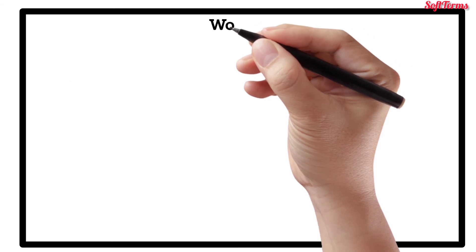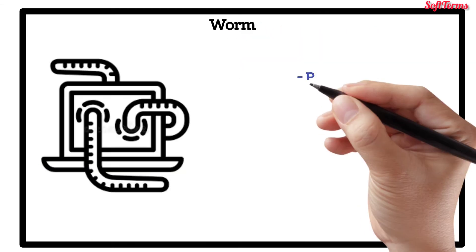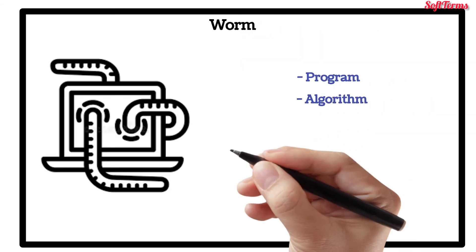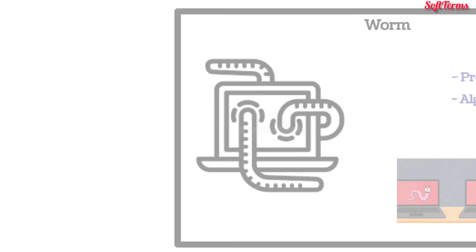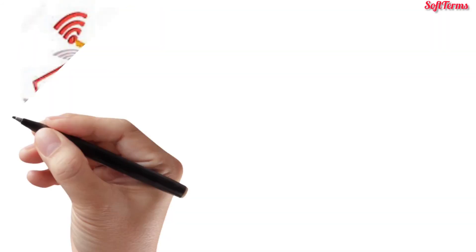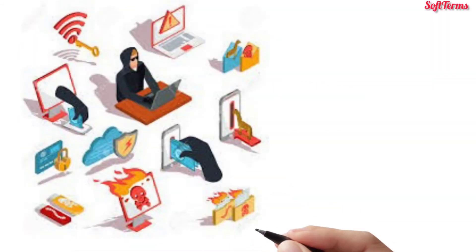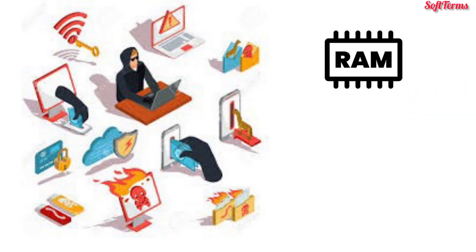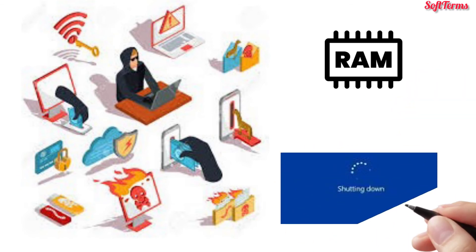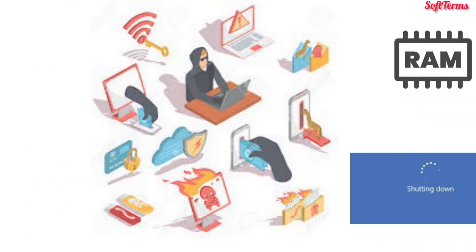Next is Worm: a computer program or algorithm that replicates itself over a computer network and usually performs malicious actions, such as using up the computer's resources and possibly shutting down the system.